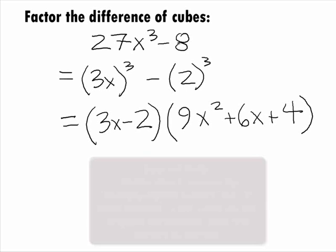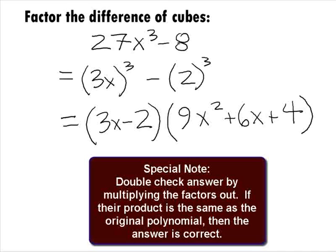Note that we can always double check ourselves on factoring problems by multiplying out the factors that we have. If they multiply to be the original polynomial, then we have the right factors. If they don't, we need to go back and try factoring the problem again.